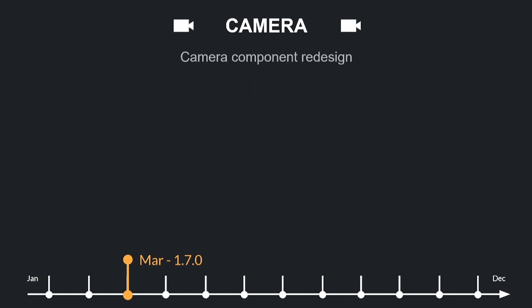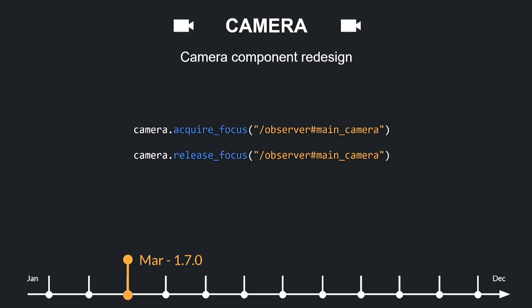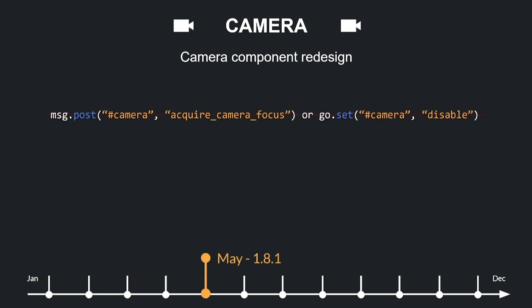Default redesigned the camera component, first introducing wrappers to acquire or release camera focus of given cameras with the camera API instead of messages, then introducing features like automatic focus acquisition and better integration with the rendering script. Previously you needed to acquire camera focus by sending a proper message. Now all cameras will be enabled and updated automatically until you actively send an unacquire camera focus message or use go.set to disable them. All scripts can now access the camera namespace which includes several functions for controlling cameras.